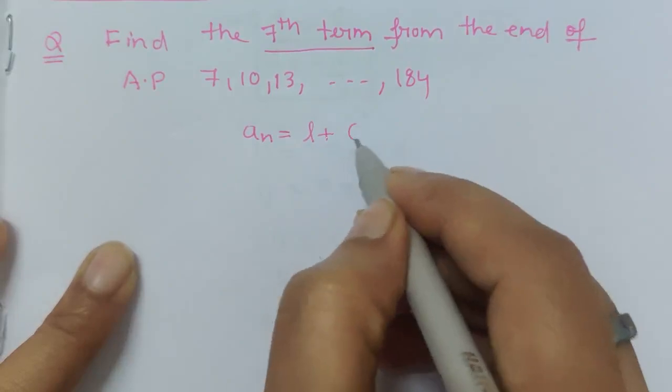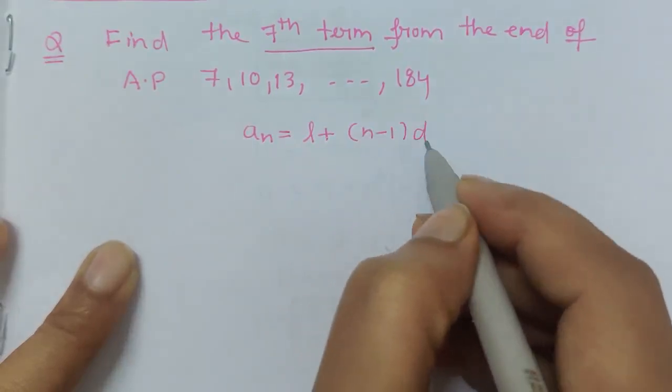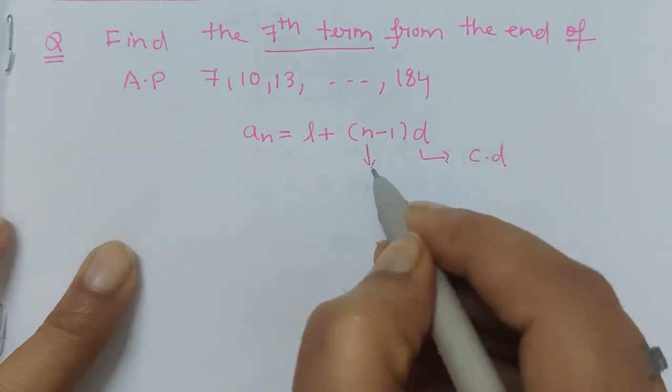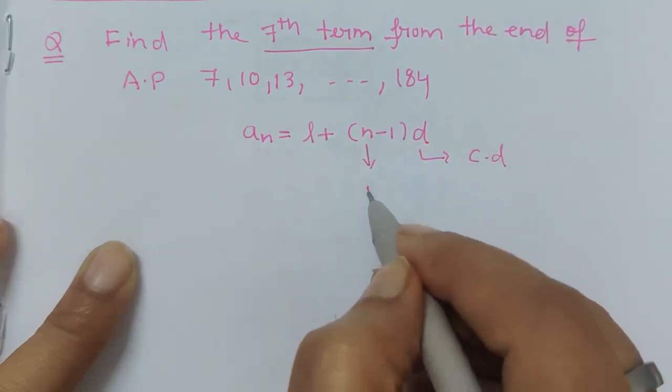Where d is common difference, n is location of the term or position of the term.